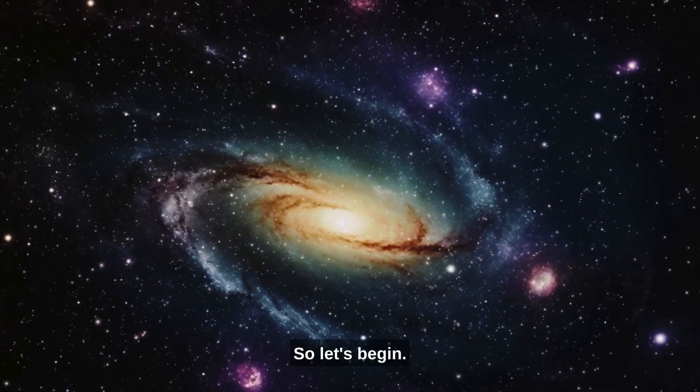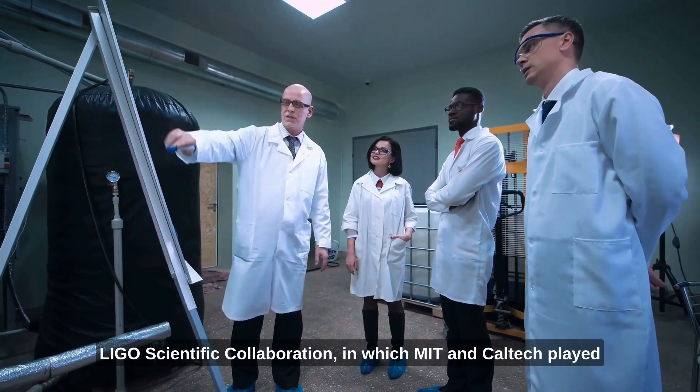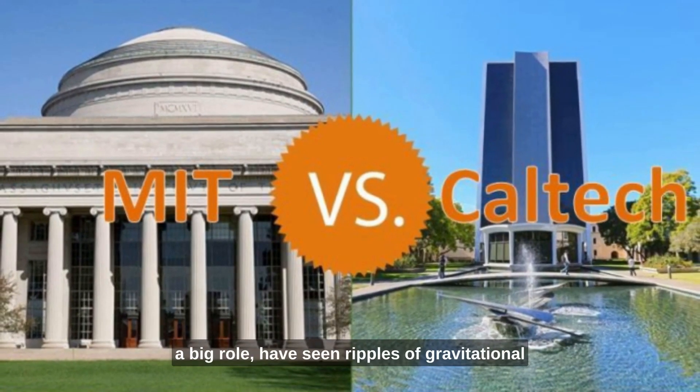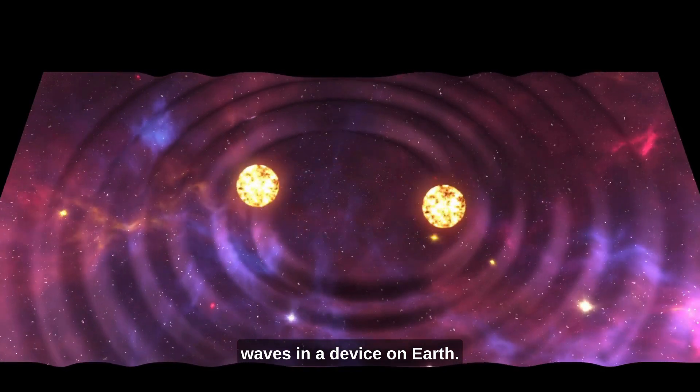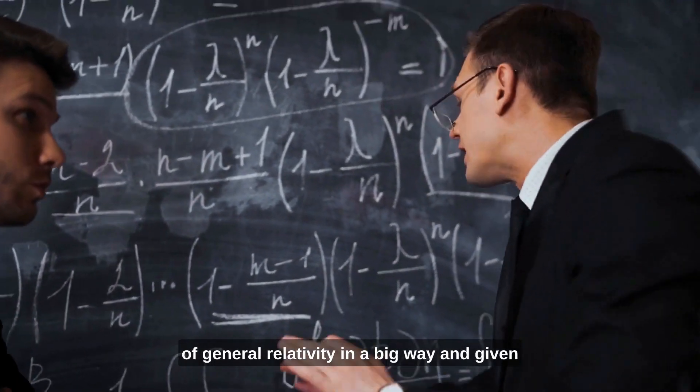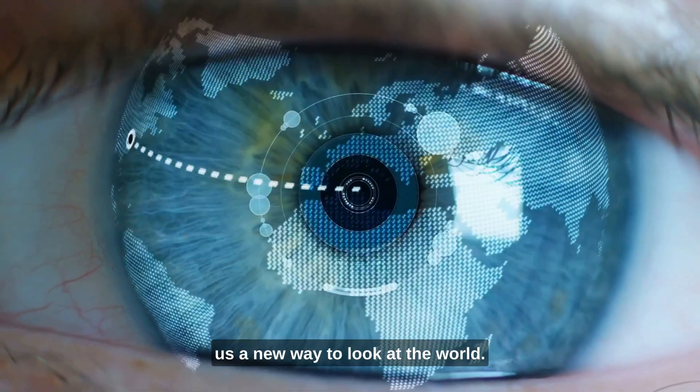So, let's begin. For the first time ever, scientists in the LIGO Scientific Collaboration, in which MIT and Caltech played a big role, have seen ripples of gravitational waves in a device on Earth. By doing this, they have again proved Einstein's theory of general relativity in a big way and given us a new way to look at the world.